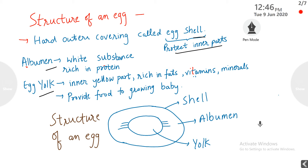Next is albumen. Albumen is a white substance which is rich in protein. Then egg yolk — the egg yolk is the inner yellow part which is rich in fats, vitamins, and minerals, and its function is to provide food to the growing baby. The hard outer layer is the shell, the inner white portion is the albumen, and the inner yellow portion is the yolk.